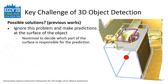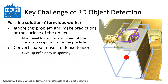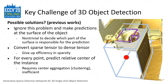Previous works handle this issue mostly in one of three methods. First, we may ignore this issue and make predictions directly at the surface of the object. However, it is non-trivial to decide which part of the surface is responsible for making the instance prediction, especially when the input scan is incomplete. Second, we may convert the sparse tensor to a dense tensor. However, the number of voxels in a dense tensor grows cubically, and a huge amount of computation is wasted in empty space. Lastly, we may make every point predict the relative center of the instance, which requires inefficient post-processing such as clustering.